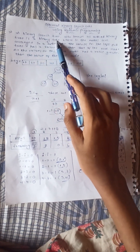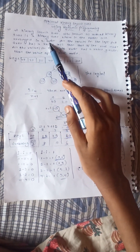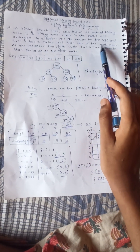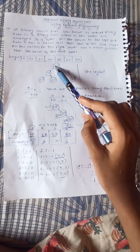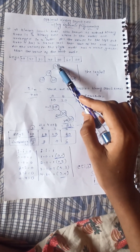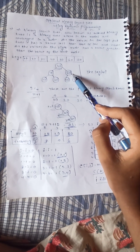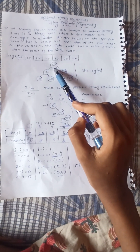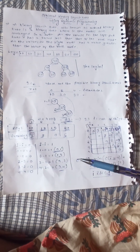A binary search tree, also known as an ordered binary tree, is a binary tree wherein the nodes are arranged in order. All the values in the left subtree have a value less than the root node. All the values in the right node have a value greater than the value of the root node. Now I'll take an example and solve it using dynamic programming, and I will also use the formula.